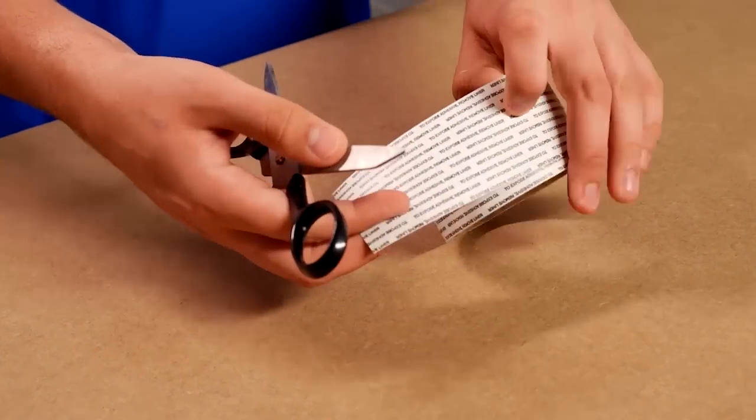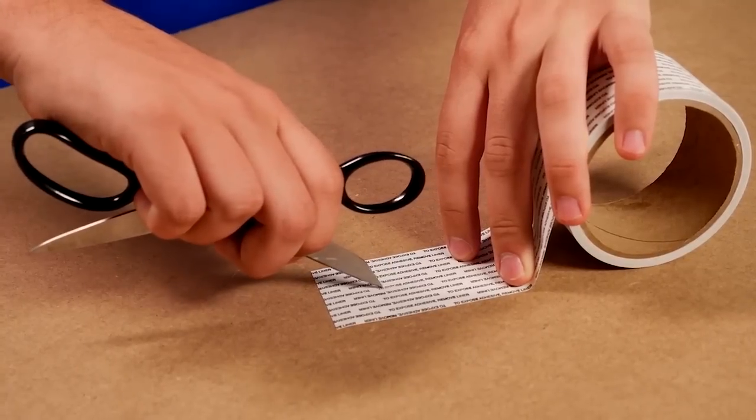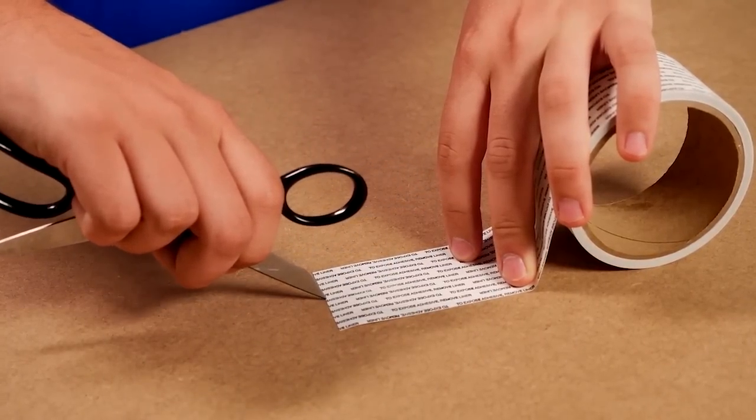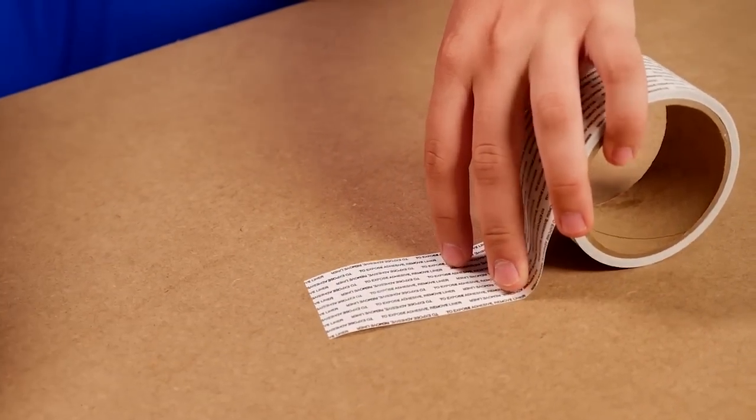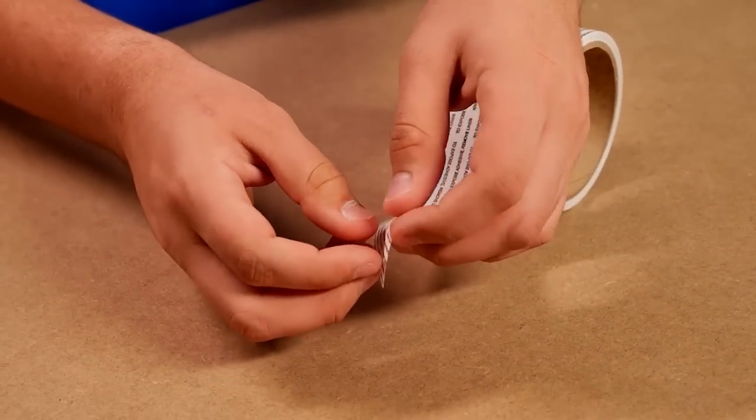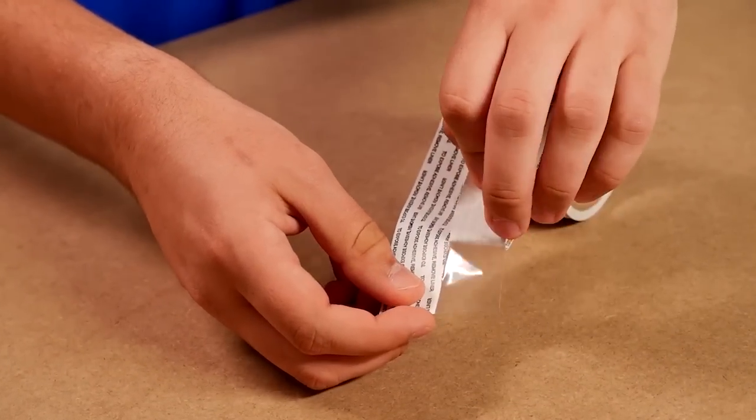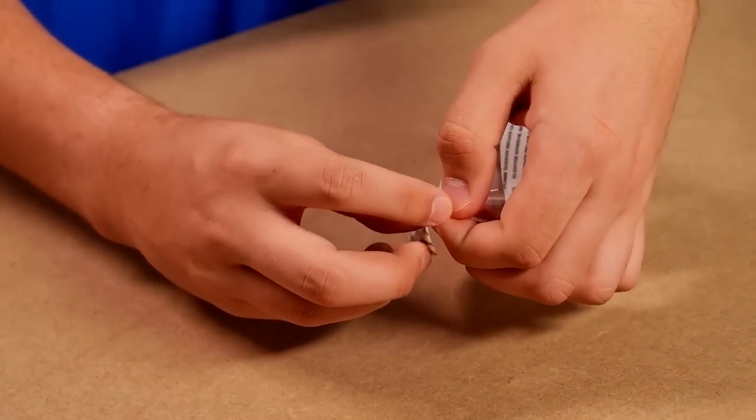After removing the mat's release liner, apply the non-adhesive side of Musclebound waterproofing 2-inch seam tape to seal all mat seams just prior to setting tile. Begin by scoring each length of seam tape and peel a short amount of the release liner from the seam tape's adhesive side.